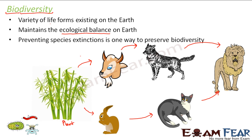Preventing species extinctions is one way to preserve biodiversity. Biodiversity is the variety of life forms. If one by one species start becoming extinct, the variety will reduce. Suppose you go to a restaurant with a buffet dinner offering eight varieties of sweet dishes, but three of them are over — so you are just left with five. Similarly, when few living organisms become extinct, the variety decreases. When the variety decreases, biodiversity loses its charm and the entire ecological balance is disturbed, and that is not desirable.